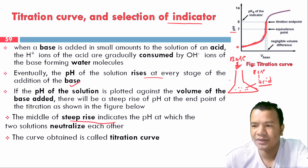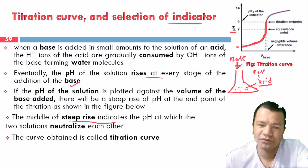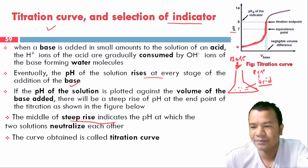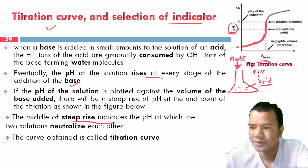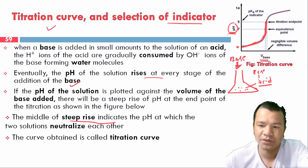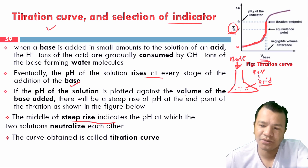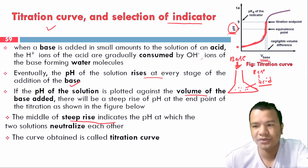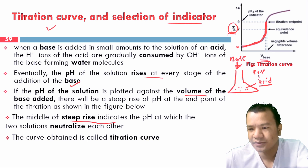This is how we understand the concept of a titration curve. The titration curve is obtained by plotting the pH of the solution versus the volume of base added.